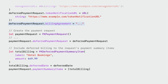If we have a billing agreement we need to display to the user, this can also be set on the deferred payment request. Once we have the request created and configured, we can then attach it to our PKPaymentRequest. For the payment summary items on our request, we create another PKDeferredPaymentSummaryItem with the same amount and date as before, but this time with a label representing the name of the merchant. We set this on the request and we're ready to present for payments.